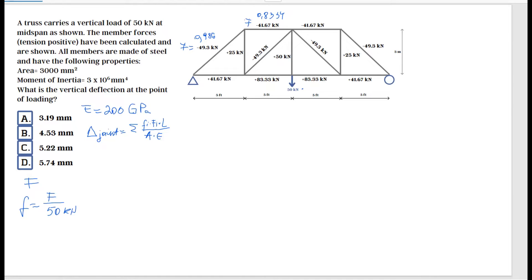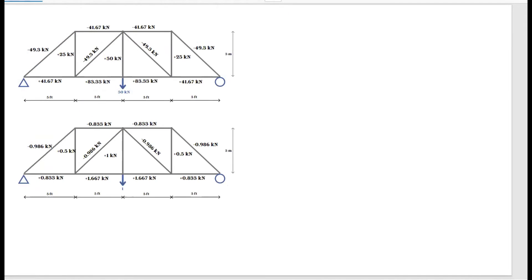I've already done those divisions and listed them. It's very important to carry the signs: negative means compression, positive means tension. We must carry those signs through for both capital F and lowercase f. Now that we have both sets of values, we can calculate the deflection at the joint.